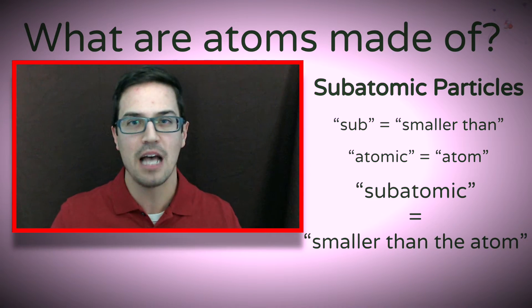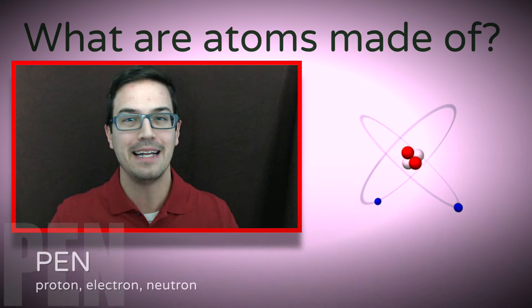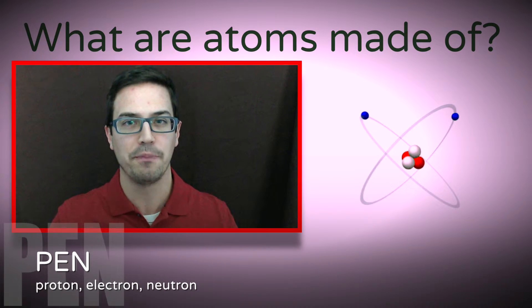The three main subatomic particles that we're going to be covering in chemistry are the proton, electron, and neutron. An easy way to remember these is it spells out the word pen.